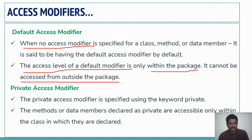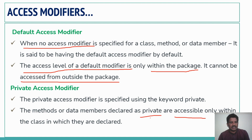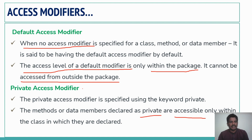When it comes to private, we use the private keyword. Methods or data declared as private are accessible only within the class in which they are declared. The private data cannot be accessed from outside the class. Due to security reasons, we declare data as private so that it cannot be accessed from outside the class.